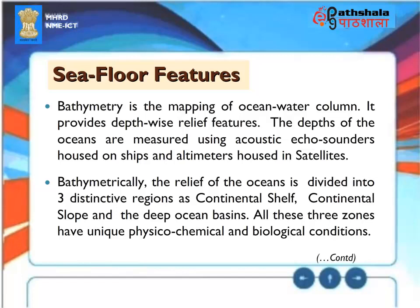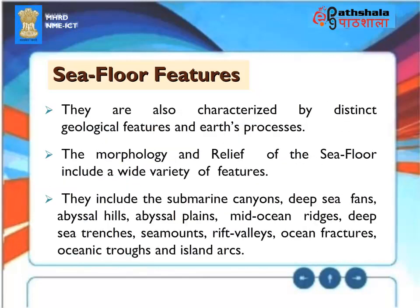Seafloor Features. Bathymetry is the mapping of ocean water column, providing depth-wise relief features. The depths of the oceans are measured using acoustic echo sounders housed on ships, and altimeters housed in satellites. Bathymetrically, the relief of the oceans is divided into three distinct regions: continental shelf, continental slope, and the deep ocean basins. All these three zones have unique physico-chemical and biological conditions. The morphology and relief of the seafloor include submarine canyons, deep-sea fans, abyssal hills, abyssal plains, mid-ocean ridges, deep-sea trenches, sea mounts, rift valleys, ocean fractures, oceanic troughs, and island arcs.